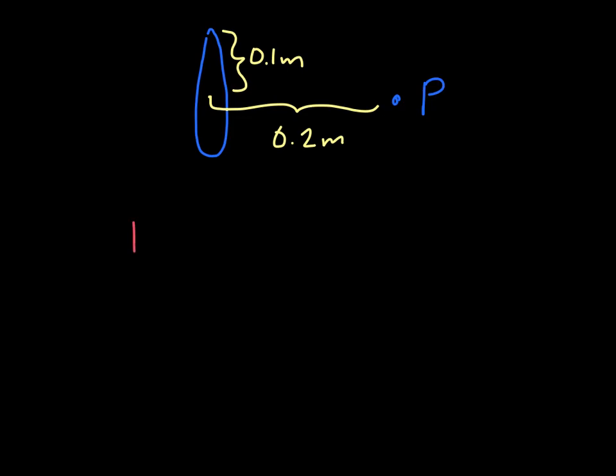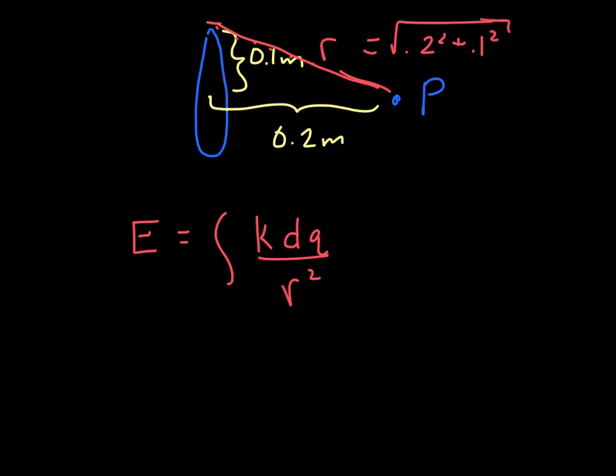So what we're going to do, again, start with the same thing. E equals the integral, and we have to use the integral because it's a continuous charge distribution, k dq over r squared. And you'll notice that I put r squared here. That's because r is the distance from dq to this. And this is r, which equals the square root of 0.2 squared plus 0.1 squared. And this is constant. Any point on this ring is going to have that, so we can just treat it like that.